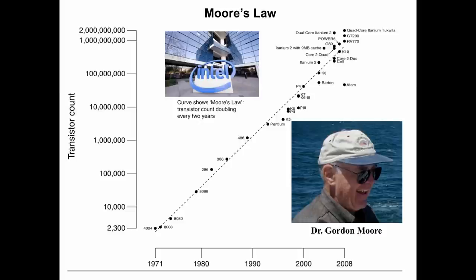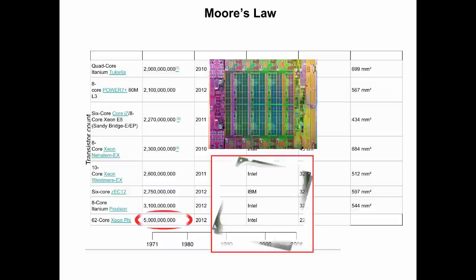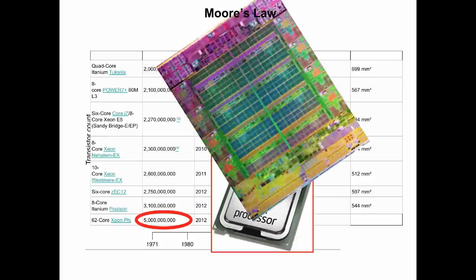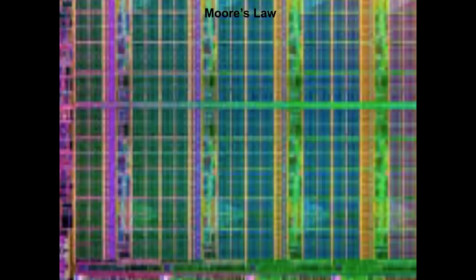Since then, the number of transistors doubled every two years. The latest Intel chips have an incredible 5 billion transistors, and today no one is sure for how long this miniaturization race can continue. New ways forward are being explored.